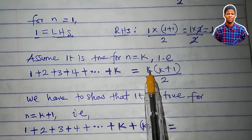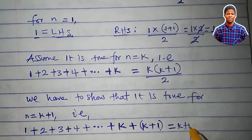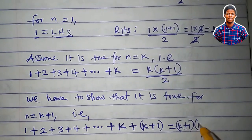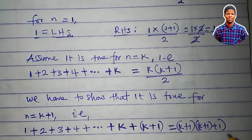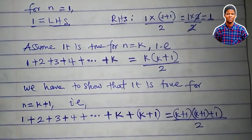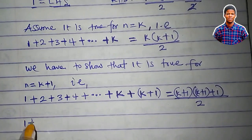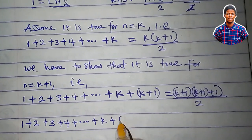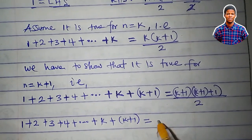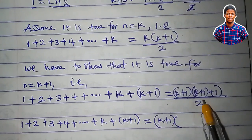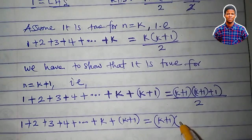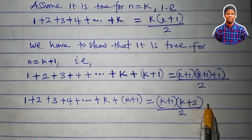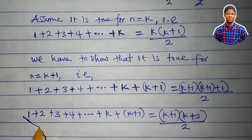So this alone is k plus 1 times k plus 1 plus 1, all over 2. Let's simplify it. What we have now says 1 plus 2 plus 3 plus 4 plus k plus k plus 1 is equal to k plus 1 in brackets, times k plus 2 — because 1 plus 1 gives us 2 — all over 2. This is what we have to show and want to prove.